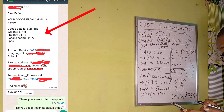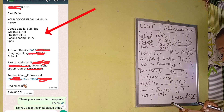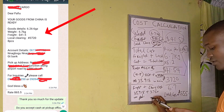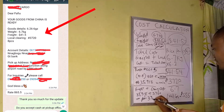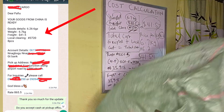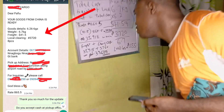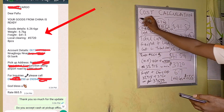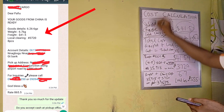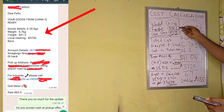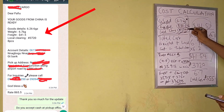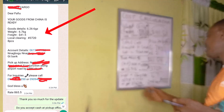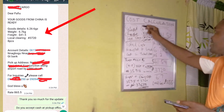Adding 35,918 naira plus 3,720 naira gives us 39,638 naira. This is the actual total amount we need to clear these 6.7 kg items. The shipping company gives you the freight price and clearing cost — it is your responsibility to use this formula to arrive at the total cost.